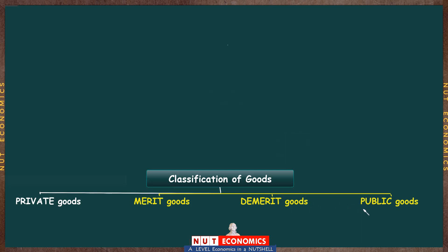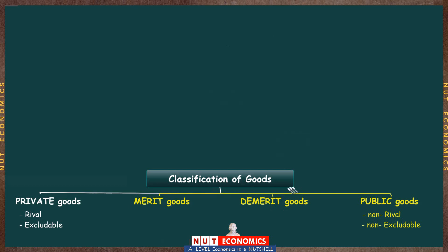The ideas involved are pretty straightforward and very simple. We are going to learn that private goods are rival and excludable whereas public goods are non-rival and non-excludable. Similarly, the way we define merit and demerit goods is pretty straightforward. But this is a very important topic — the classification of goods into these four different types.